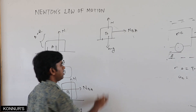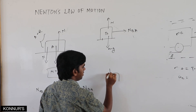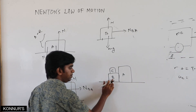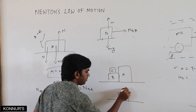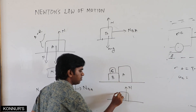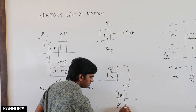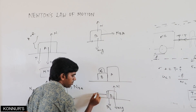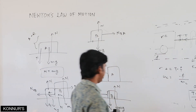For three bodies B, C, and A stacked together, the free body diagram of B includes: normal by surface upward, M_B·g downward, normal force by C on B (downward), and normal force by A on B (upward). This is the total free body diagram of body B.